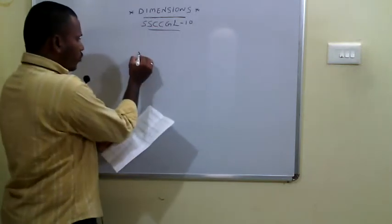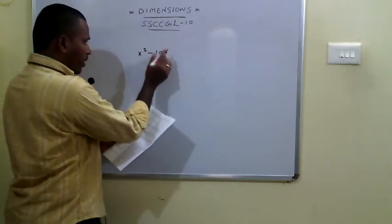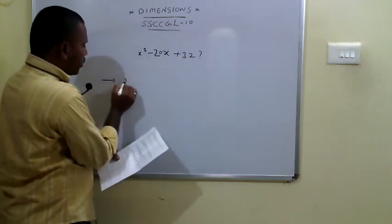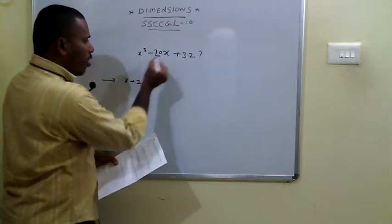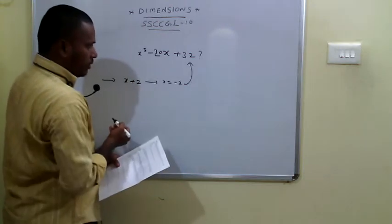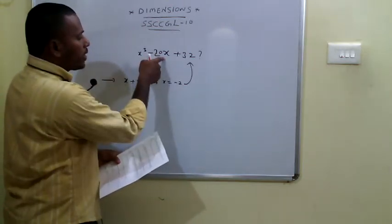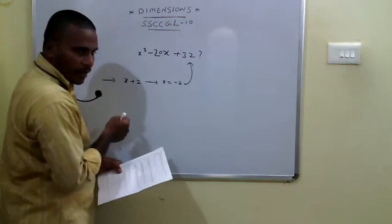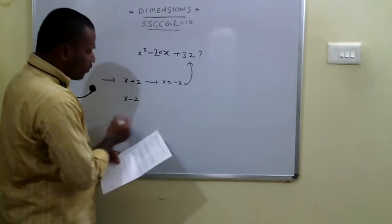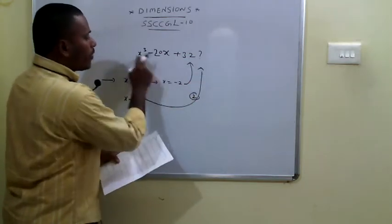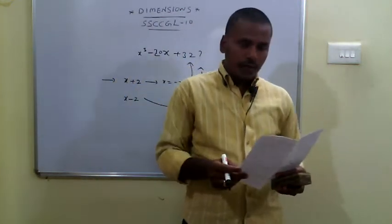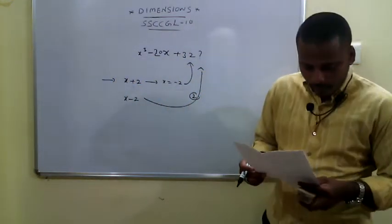The 56th problem: which of the following is a factor of x³ − 20x + 32? To check whether (x + 2) is a factor, replace x with −2; if the result is 0 it is a factor. If not, check (x − 2) by replacing x with 2. Checking each option this way, the answer is (x − 2).